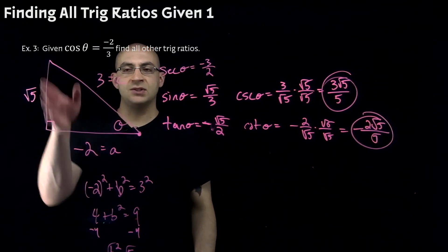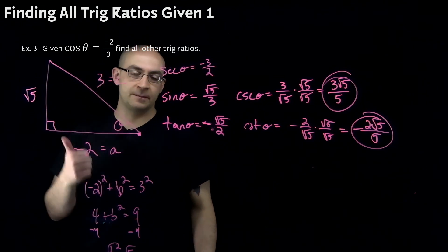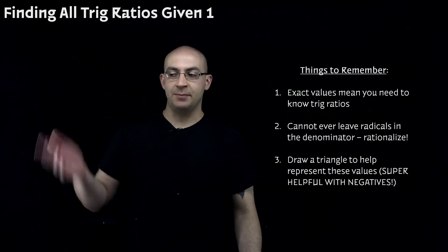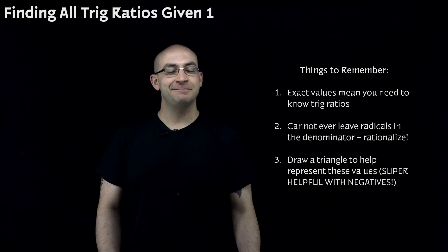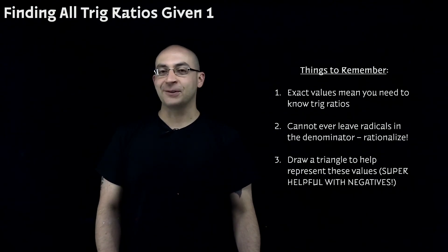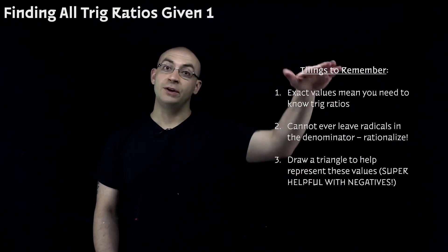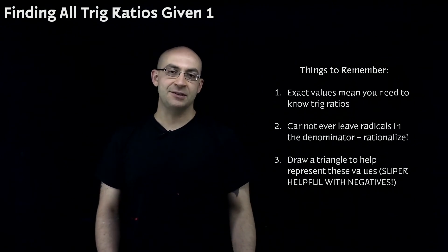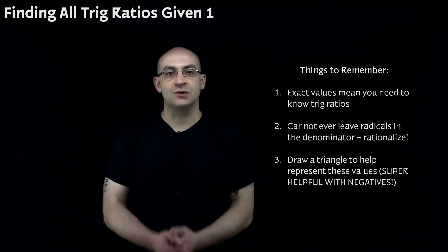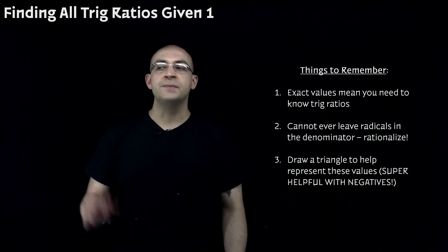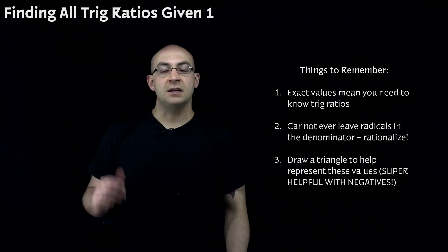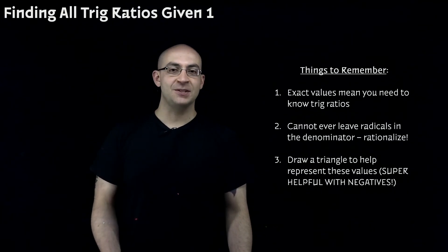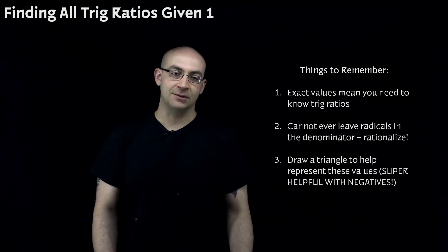A little more challenging because of the negative, but as long as you understand where it lies on the unit circle, you're good. Three things to remember from this video: number one, exact values mean you need to know your trig ratios — SOHCAHTOA and the reciprocal three. Number two, you can never leave radicals in the denominator; always rationalize. Number three, drawing triangles helps extensively — if you're given a positive value, you're in good shape; if you have a negative value, remember where it lies on the unit circle and go from there. See you next time.